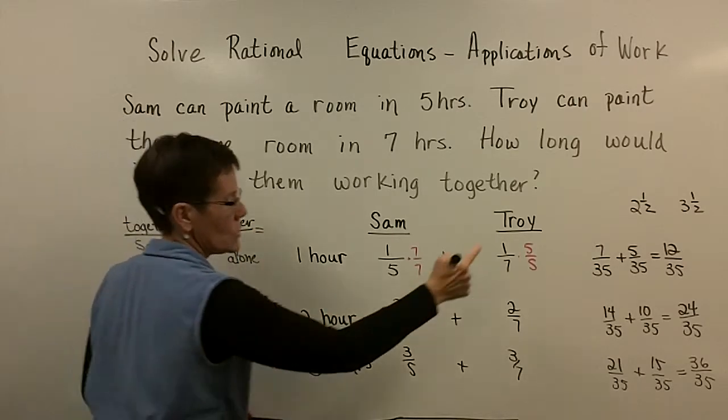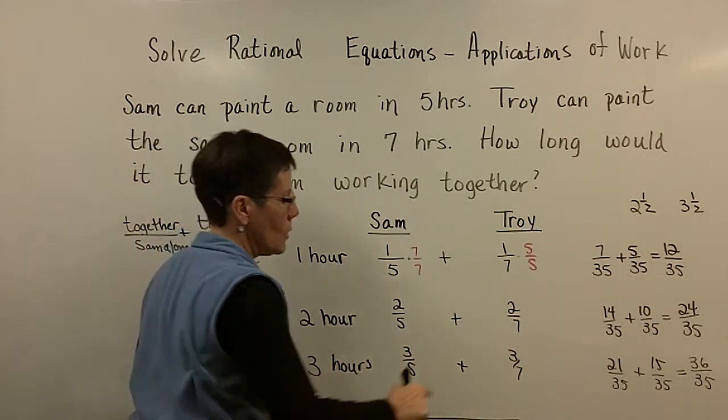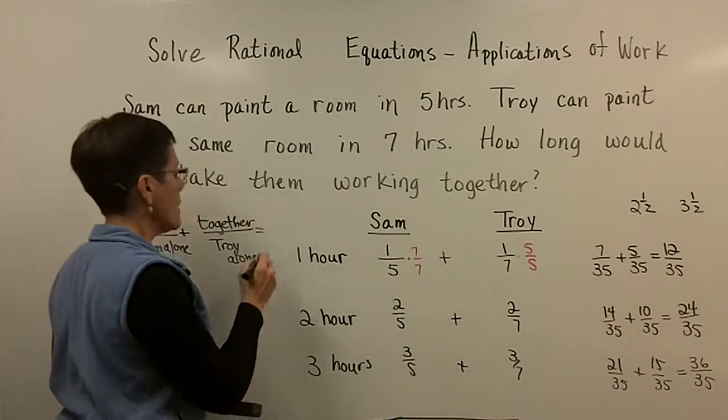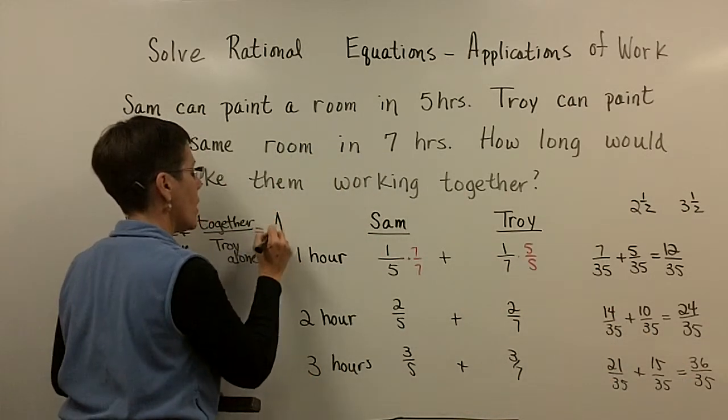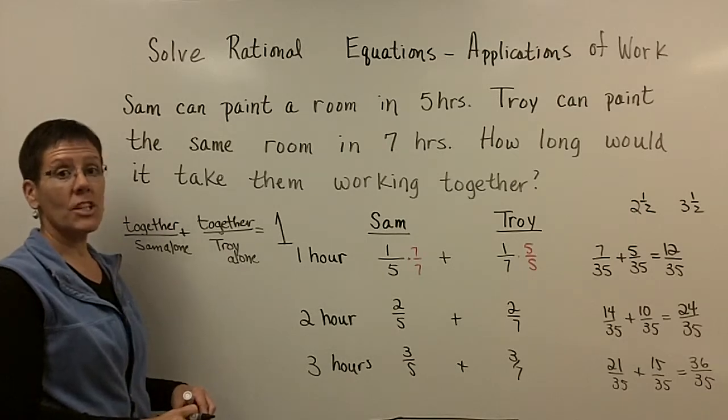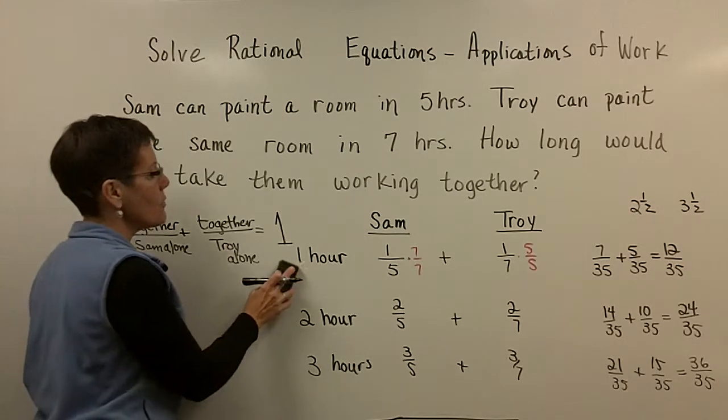And they didn't want to get twenty-four-thirty-fifths done, or thirty-six-thirty-fifths done. They wanted to get the project done. They wanted to finish the whole. So finally, let's actually do this algebraically.